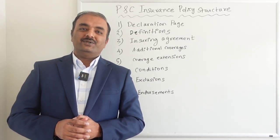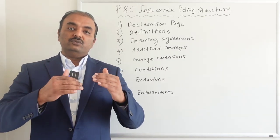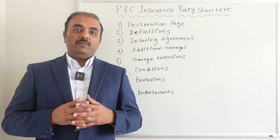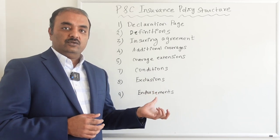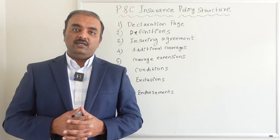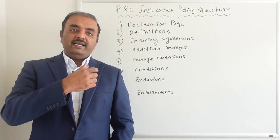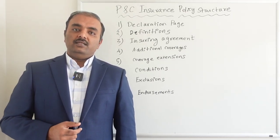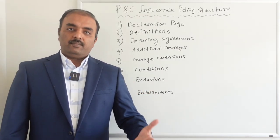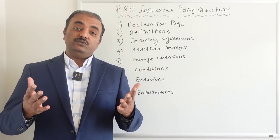Exclusions are a very important section. As a customer, it's important to go through the exclusions because if the insurance company does not want to cover a particular hazard or peril, they will list it under exclusions. One very common exclusion is flood — most homeowners policies don't provide flood coverage, so it is added as part of exclusions. All such excluded coverages are listed in the exclusions section.